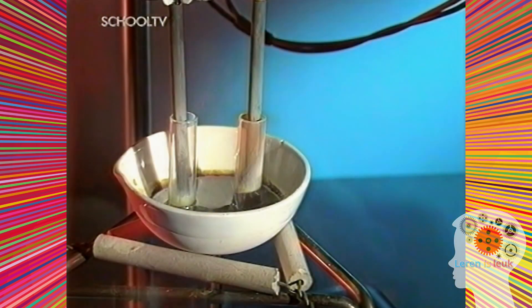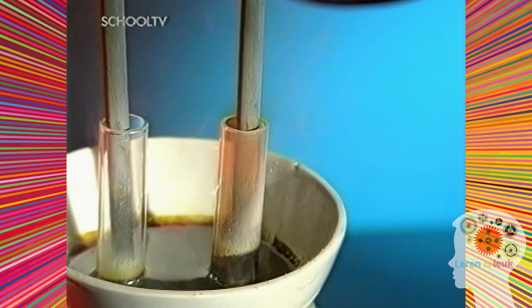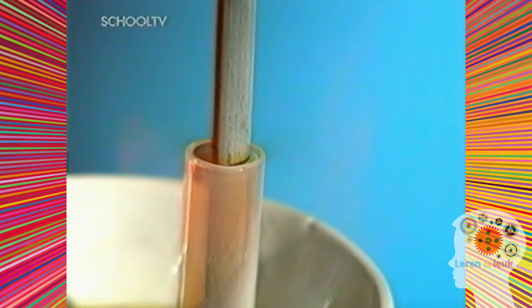We zetten een aantal kleine buisjes om de elektroden heen die het gas opvangen, zodat we kunnen zien wat voor kleur het heeft. Wat voor gas zou het bruine zijn? Dat is broom.